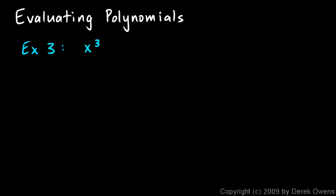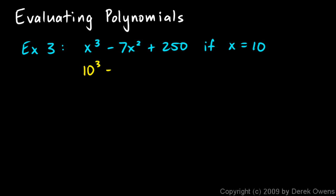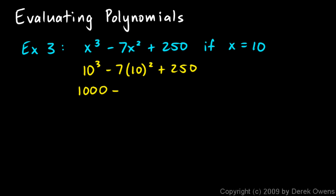Example 3: evaluate x cubed minus 7x squared plus 250 if x equals 10. We rewrite the polynomial using the value 10: 10 cubed minus 7 times 10 squared plus 250. 10 cubed is 1000. For 7 times 10 squared, we do 10 squared first — that's 100 — then multiply by 7 to get 700. So 1000 minus 700 is 300, plus 250 works out to 550.